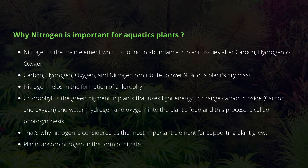So why is nitrogen important for aquatic plants? Nitrogen is one of the main elements found in abundance in plant tissue after carbon, hydrogen, and oxygen. If you check the plant's dry mass, you will find that carbon, hydrogen, oxygen, and nitrogen together make up a massive 95% of a plant's dry mass.